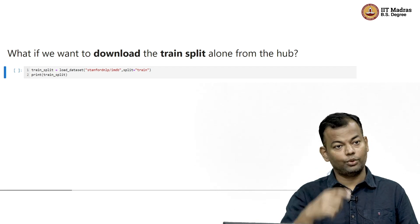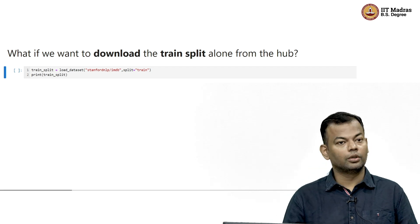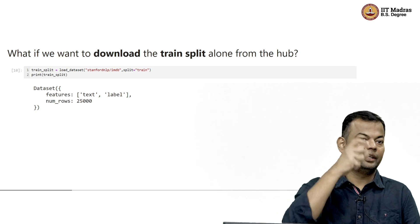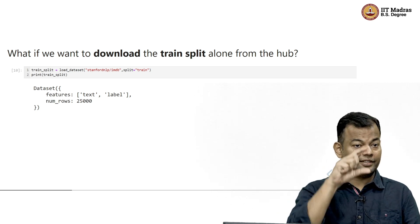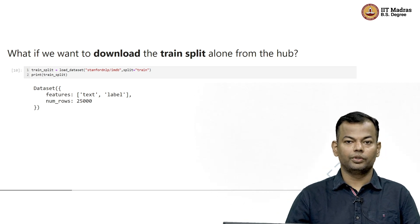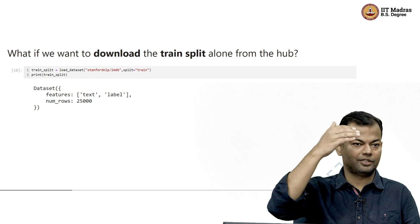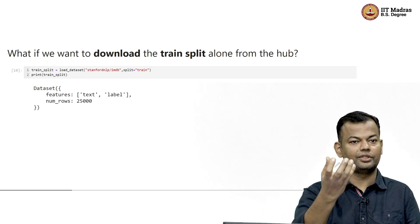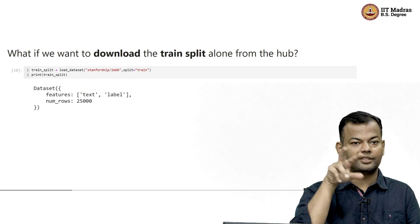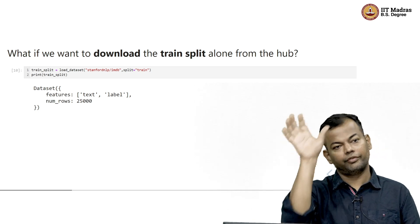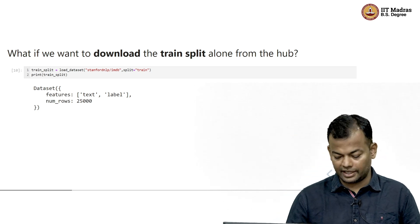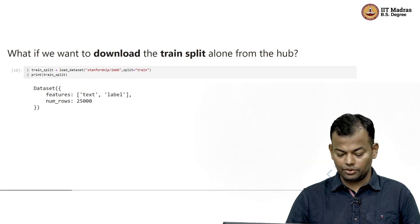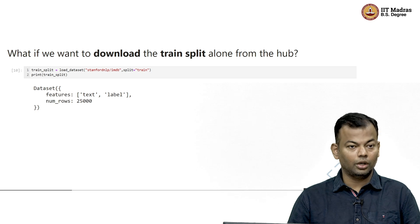Let's execute this and think about what would get printed. As you can see, only the train dataset object has been fetched — there is no dictionary now because you specifically asked for the train dataset. It's the same as accessing the train part of the original dataset, and hence the same dataset object gets printed: a table containing 25,000 rows and two columns.